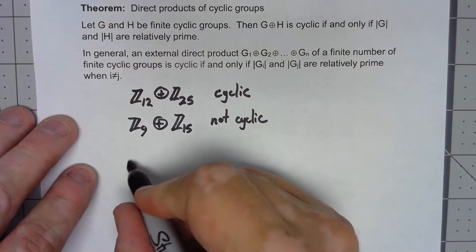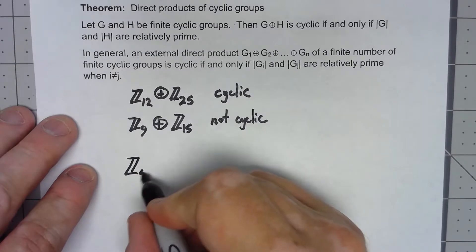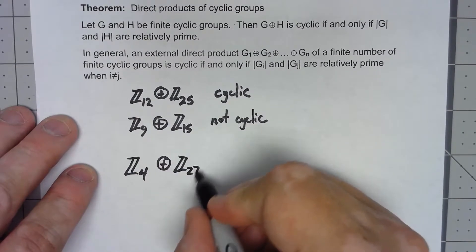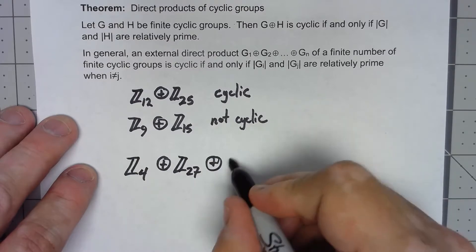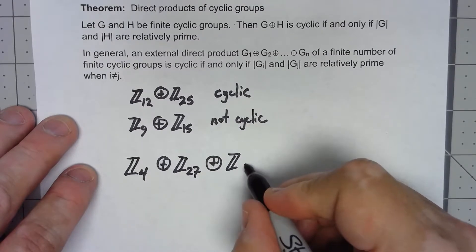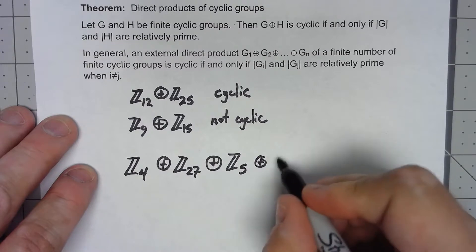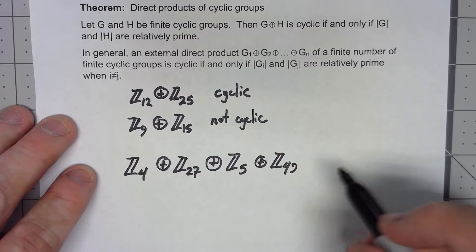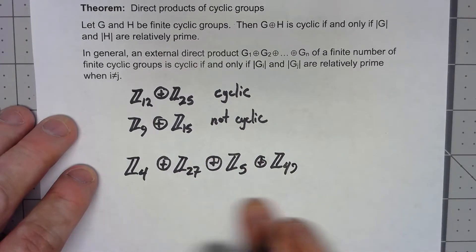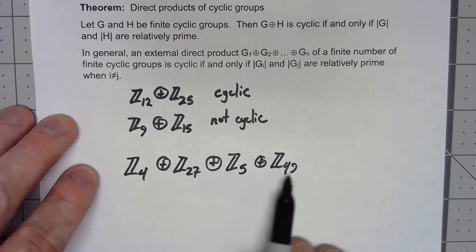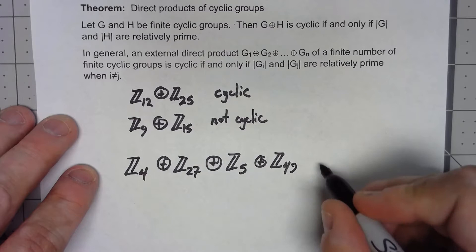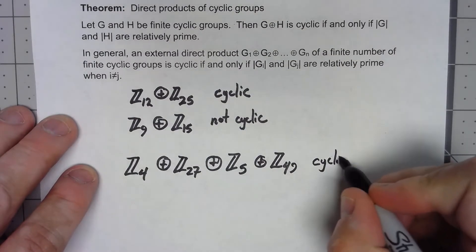For example, Z4 plus Z27 plus Z5 plus Z49. In general, this thing would be really tough to analyze without something like this. However, each of those things is relatively prime to all the others, so that's going to have to be cyclic.